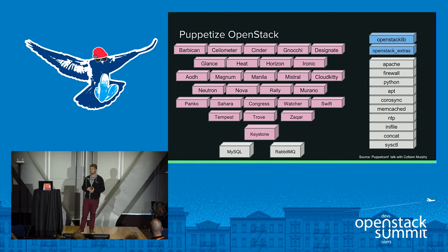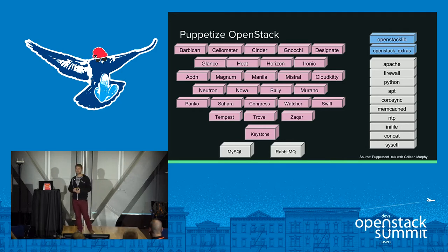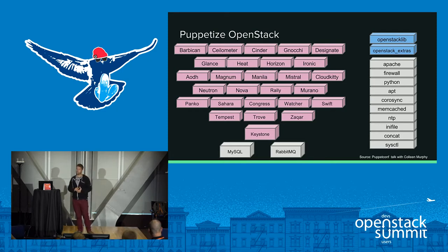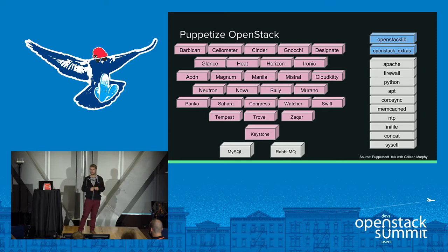So how does it work when you try to puppetize OpenStack? We have one Puppet module per project. If you're deploying your cloud, you can choose which Puppet modules to use depending on what you want to deploy. We use some modules from Puppet Labs to deploy MySQL, RabbitMQ, and Apache — we did not create those, we use them from the Puppet Labs community. We also have some libraries; for example, OpenStack Lib is a library where we have common classes shared across all the modules to make things more consistent.